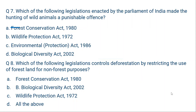Question 7: which of the following legislations enacted by the Parliament of India made hunting of wild animals a punishable offence? A: Forest Conservation Act 1980. B: Wildlife Protection Act 1972. C: Environmental Protection Act 1986. D: Biological Diversity Act 2002. The correct answer is Wildlife Protection Act 1972. Killing wild animals is a punishable offence under the Wildlife Protection Act of 1972 — you can be imposed with a fine or jailed.